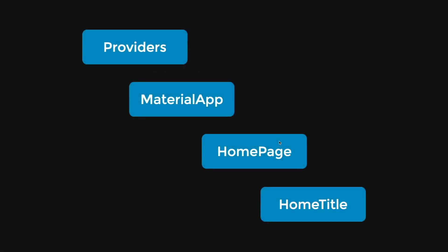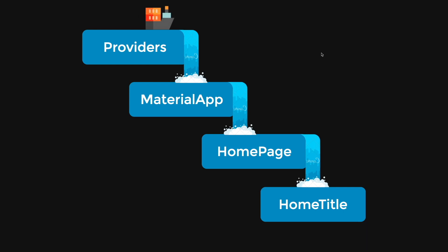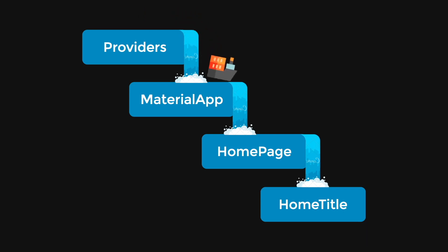For example, we have a simple app with a provider widget on top. So instead of thinking of it as a widget tree, I would like to think of it as a widget waterfall. Then we are going to send data from the provider on top, represented as a bot, down to the home title.